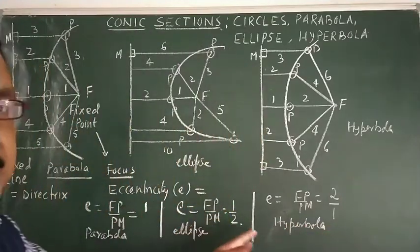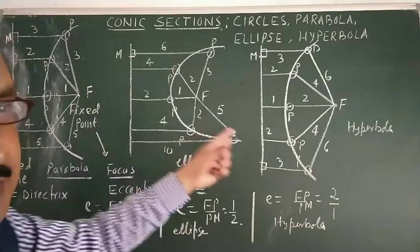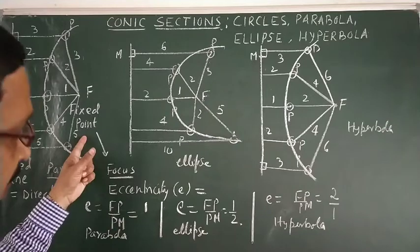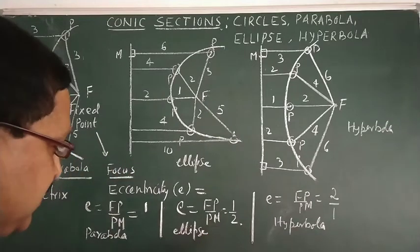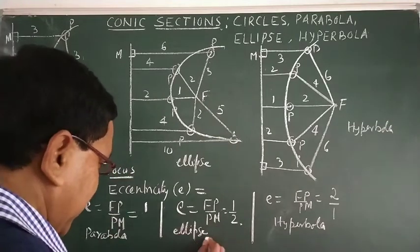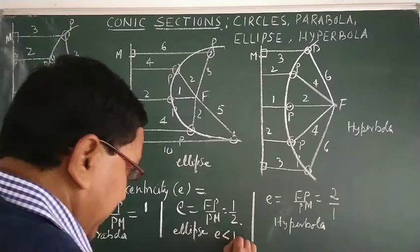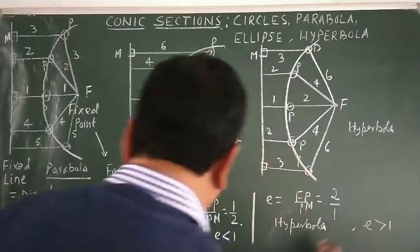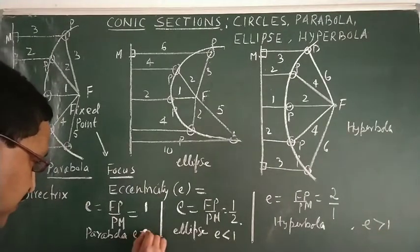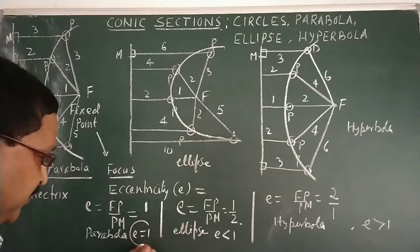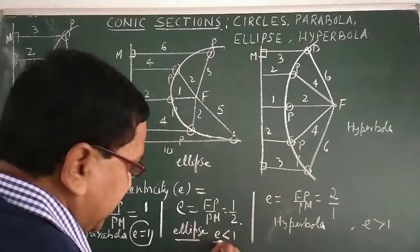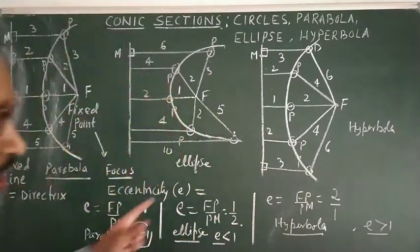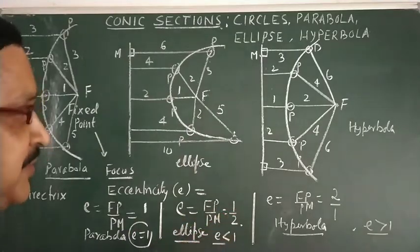On the basis of eccentricity, all the sections can be defined: if e equals one, it is a parabola; if e is less than one, it is an ellipse; if e is more than one, it is a hyperbola.